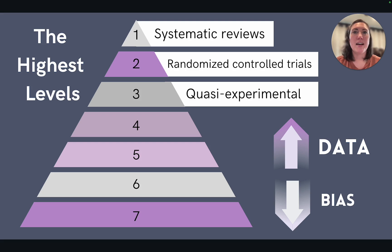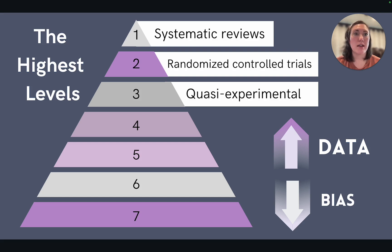The last three levels at the top of the pyramid have larger amounts of quantitative data and a lesser likelihood of bias. Level three evidence comes from non-randomized trials, which are also known as quasi-experimental trials.